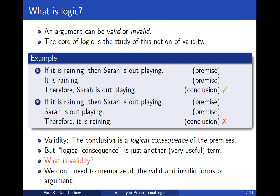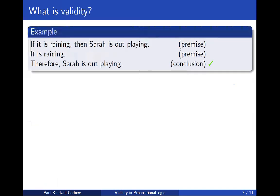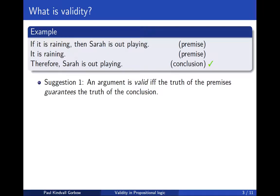So we only need to learn what validity is. So what is validity? Well, we can think about this argument again. One suggestion is that this argument is valid because the truth of the premises guarantees the truth of the conclusion. But what do we mean by guarantee? This would have to be specified further.